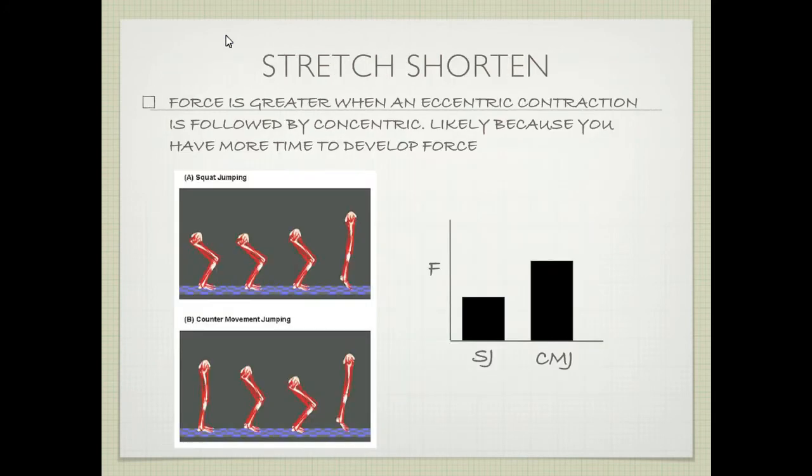Here we're comparing the squat jump (SJ), which is jumping from a squat position, compared to the counter-movement jump. You can see the counter-movement jump results in greater jump height — that's when you do a wind-up and then jump. One reason is that you have more time to build up force.